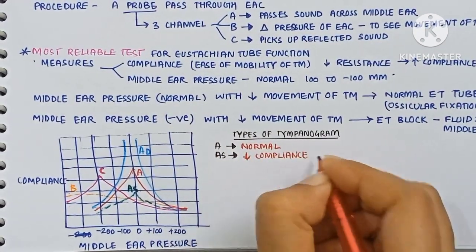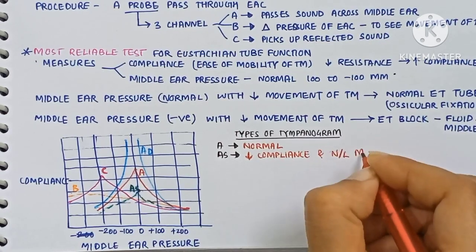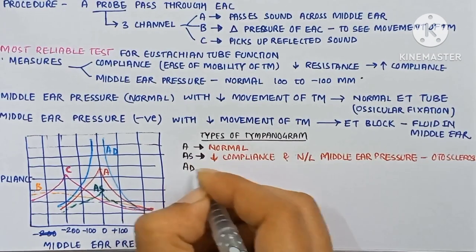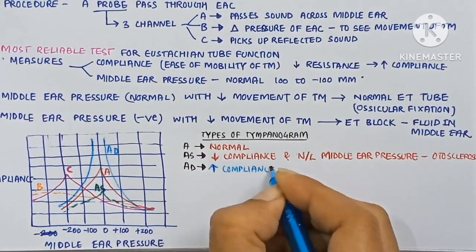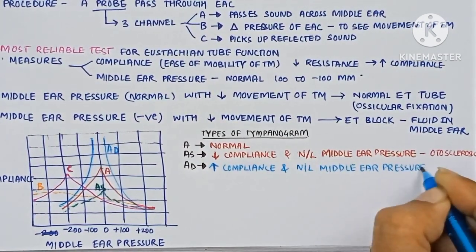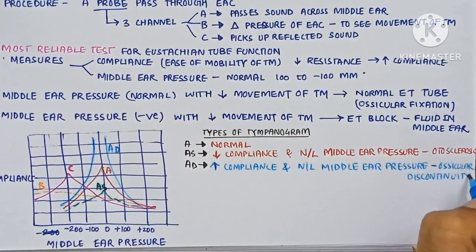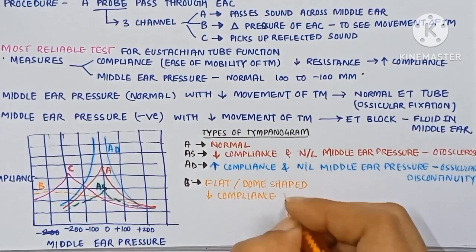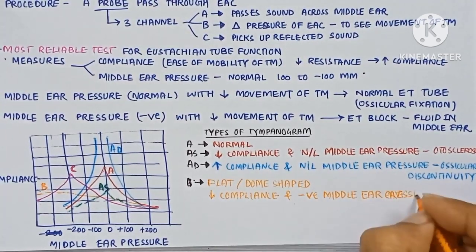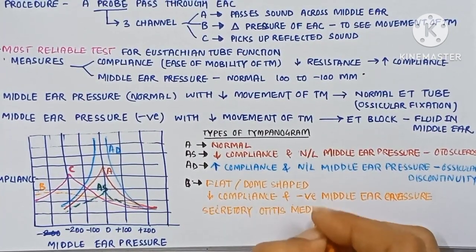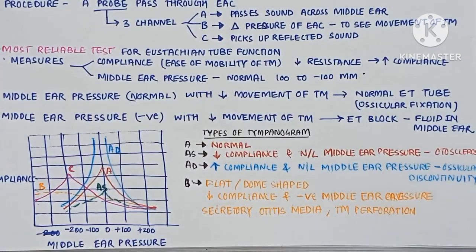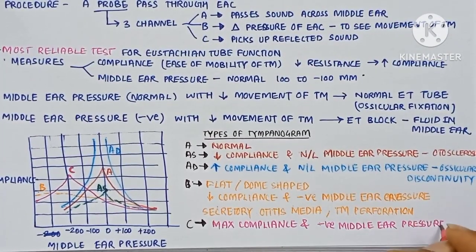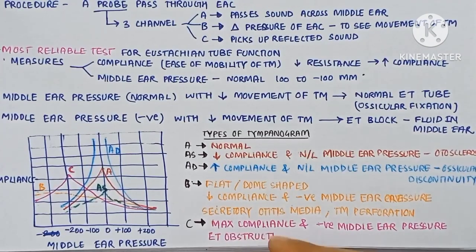Types of tympanogram: Type A is normal. Type As is lower compliance with normal middle ear pressure, seen in otosclerosis. Type Ad is increased compliance with normal middle ear pressure, seen in ossicular discontinuity. Type B is flat or dome-shaped with low compliance and negative middle ear pressure, seen in secretory otitis media and tympanic membrane perforation. Type C shows maximum compliance with negative middle ear pressure, indicating ET obstruction or early stage otitis media with effusion.